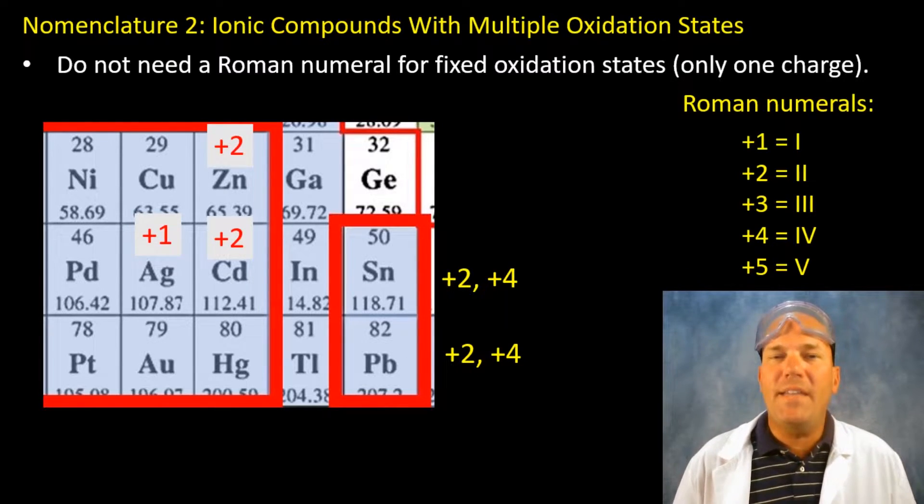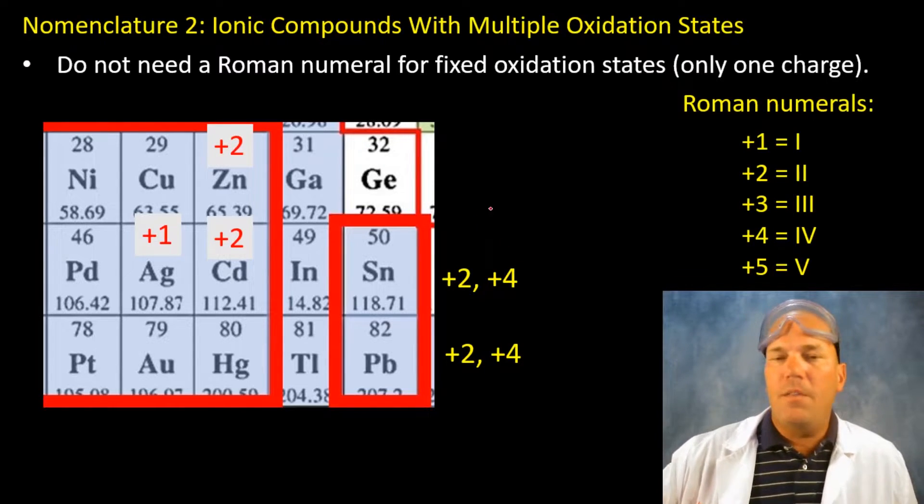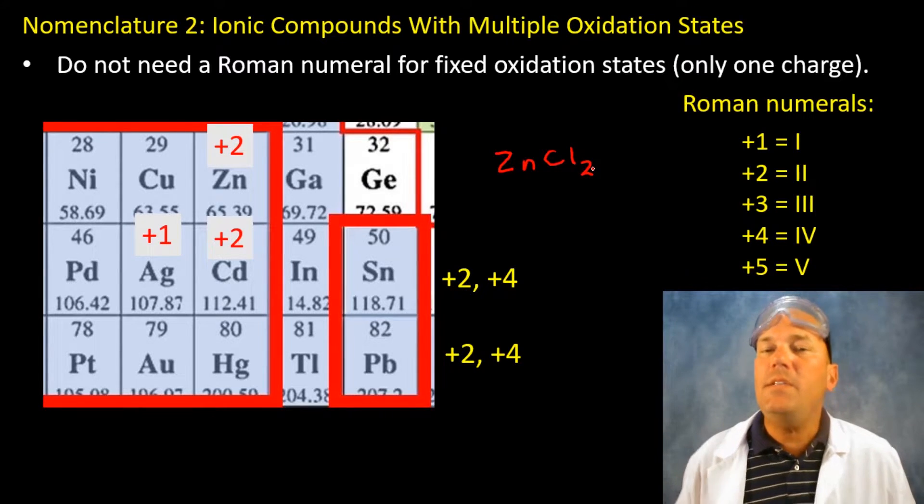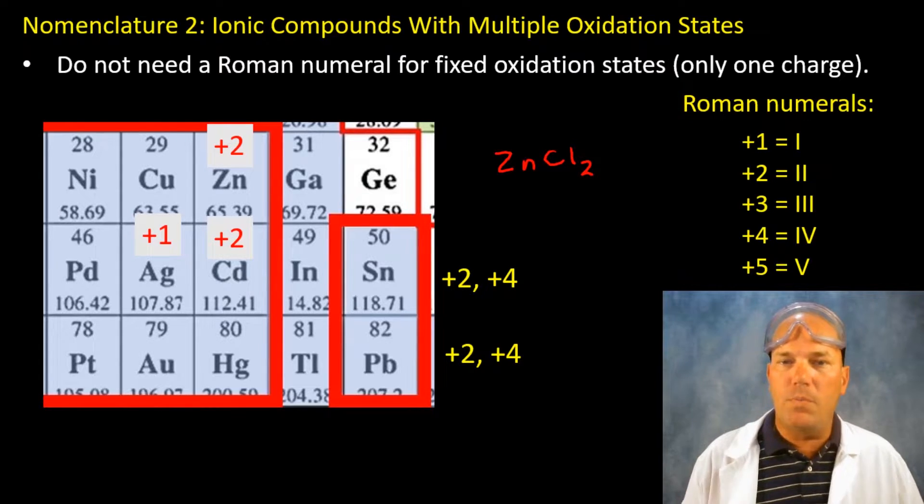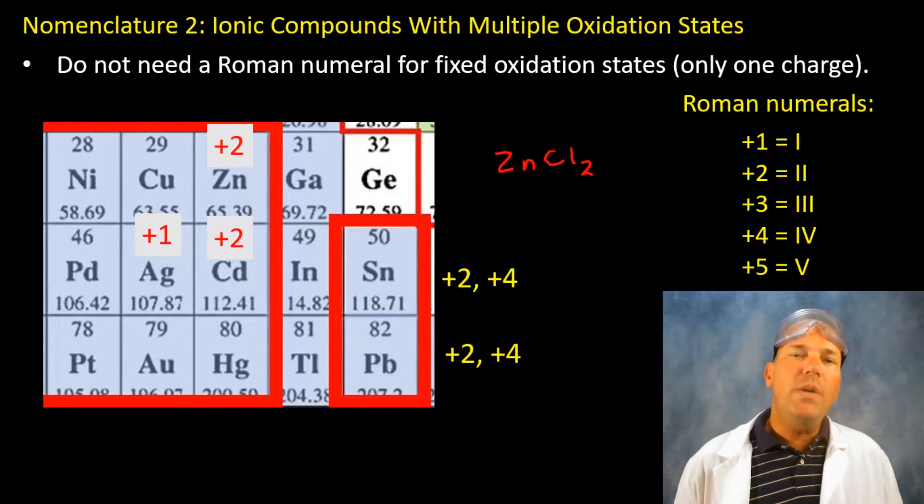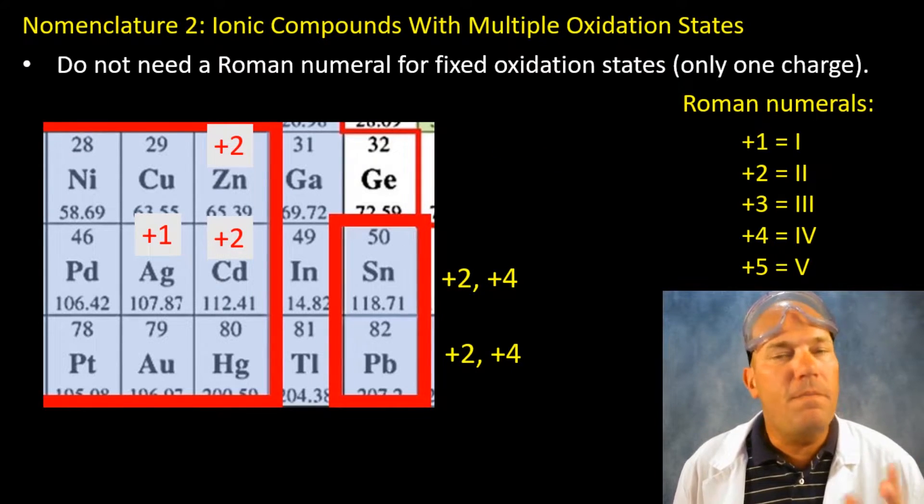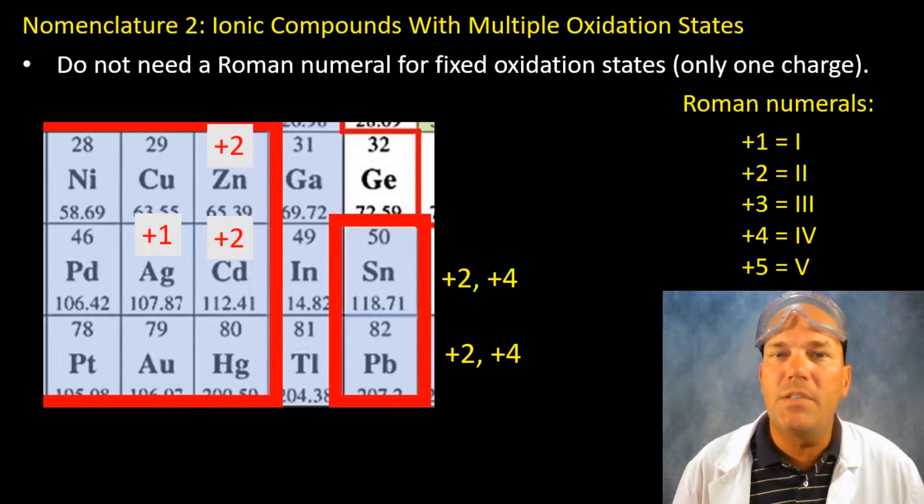That means you can say zinc chloride. Now the formula for zinc chloride would be ZnCl2 because zinc has a positive two charge and each chlorine is a minus one so you need two to balance. But you wouldn't necessarily say zinc two chloride. Now this is a very minor detail and one that I am not overly concerned with. If you called it zinc two chloride I would be fine with that.